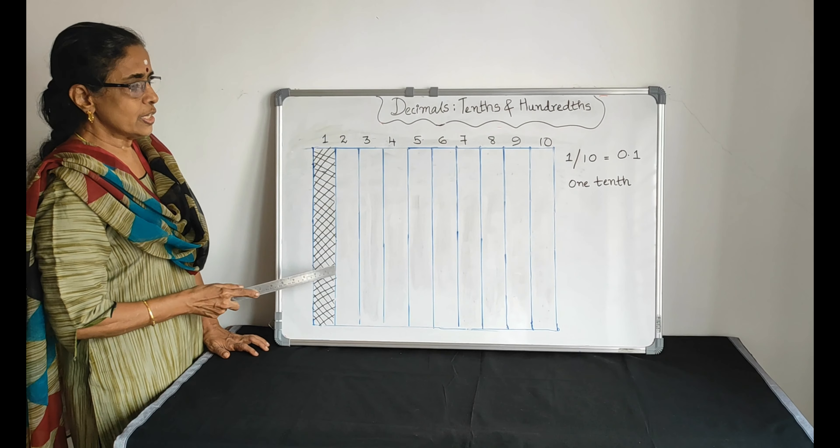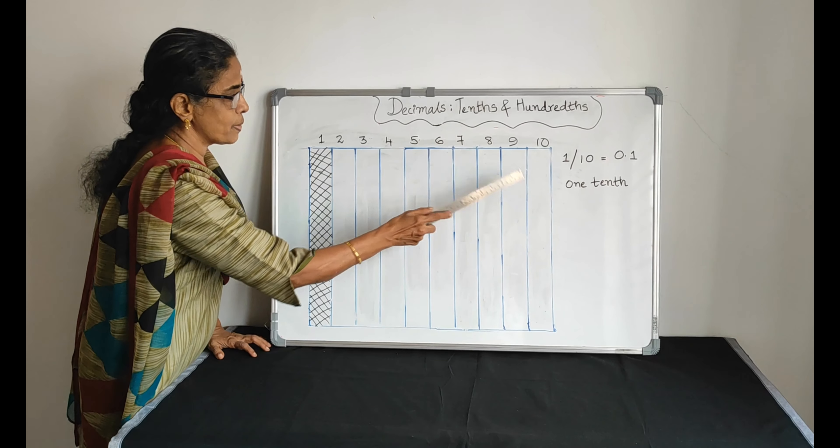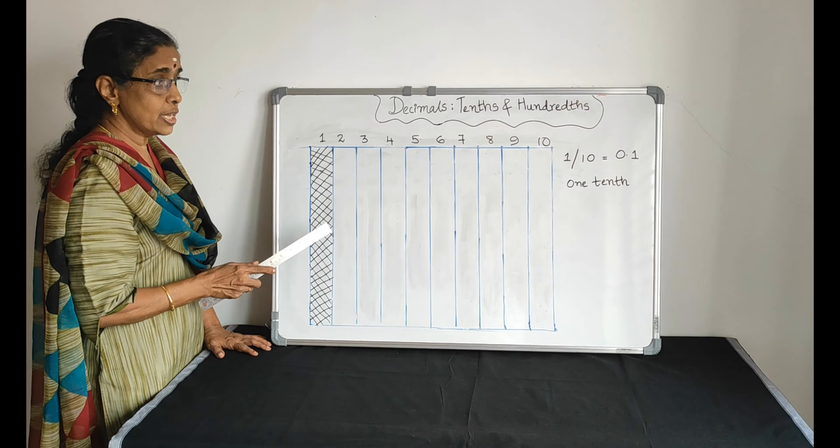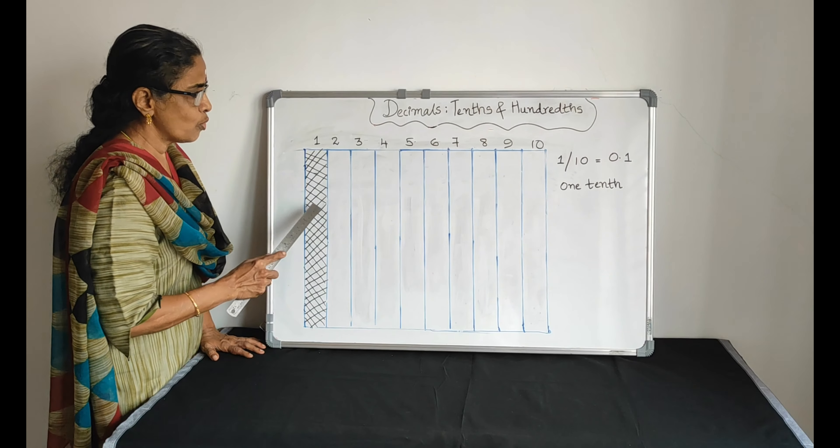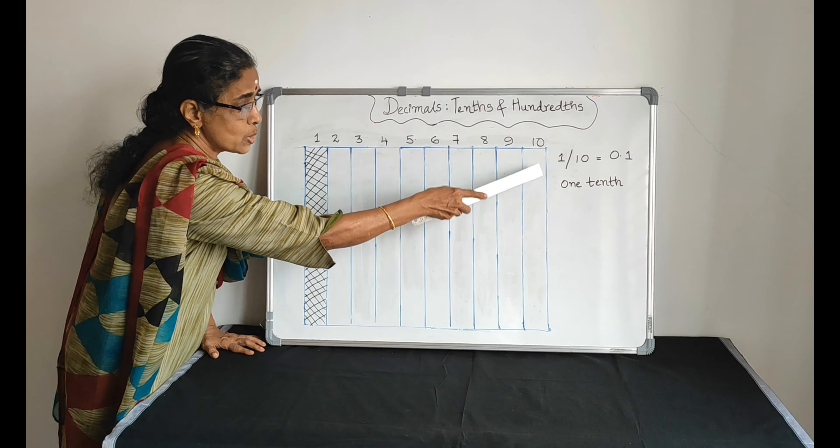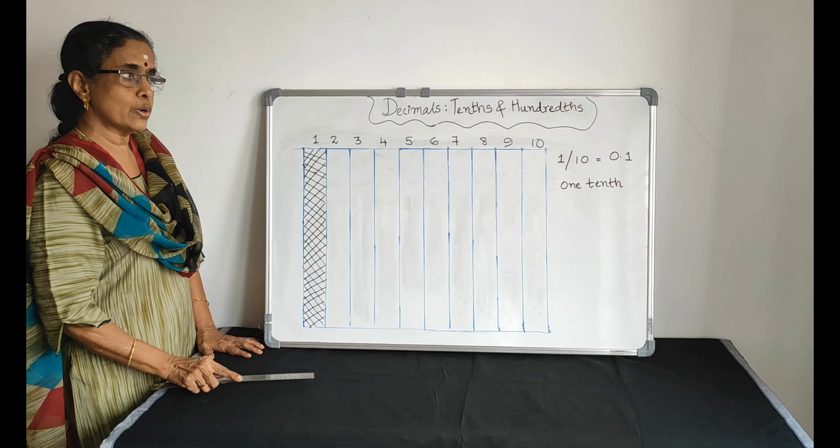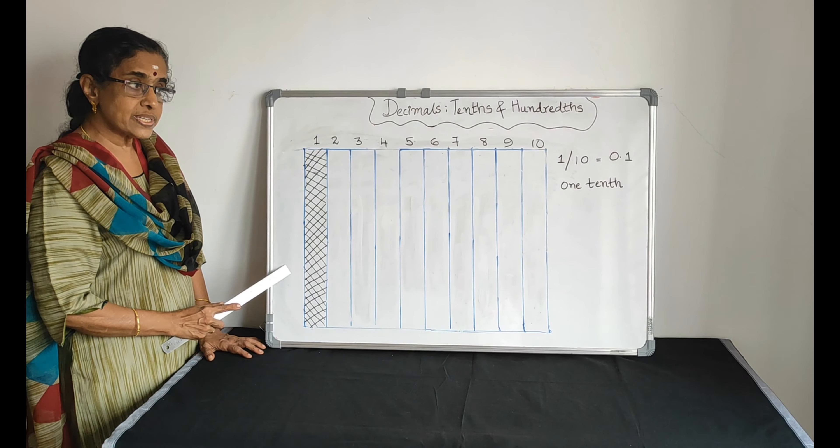Here we have divided into ten equal parts. We have equally divided into one, two, three, four—equally divided into ten equal parts. How many parts are shaded?